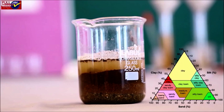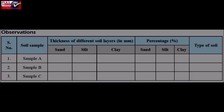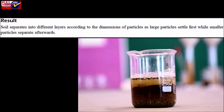Calculate the percentages of sand, silt, and clay fractions. Using a soil textural triangle, draw lines corresponding to the percentage of clay, silt, and sand. The lines where they intersect indicate the type of soil we have. Soil separates into different layers according to the dimensions of particles, as large particles settle first while the smallest particles separate afterwards.